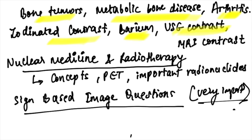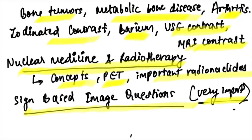Also revise bone tumors and metabolic bone diseases like arthritis. Know iodinated contrast, barium, USG contrast, and MRI contrast agents, along with their imaging appearances. In nuclear medicine and radiotherapy, cover the key concepts, PET scan, and the most important radionuclides used. Image-based and sign-based questions are very important as they will appear alongside clinical approach questions.